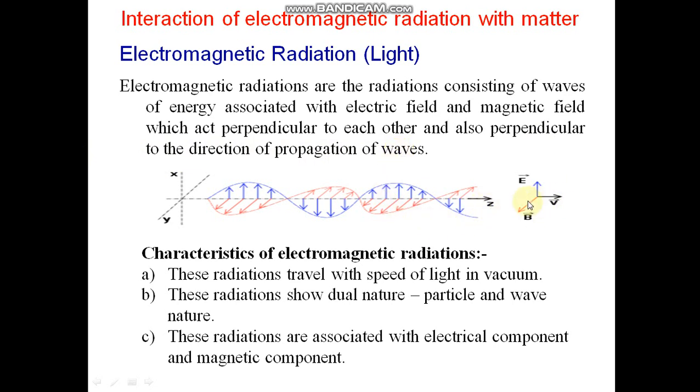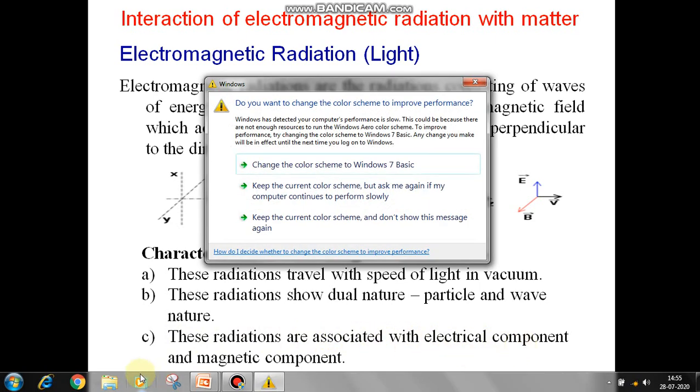See here, this is the direction of propagation, this is electric field, this is magnetic field and these are perpendicular to each other. Characteristics of Electromagnetic Radiation: These radiations travel with speed of light in vacuum. These radiations show dual nature, particle and wave nature. These radiations are associated with electric component and magnetic component.